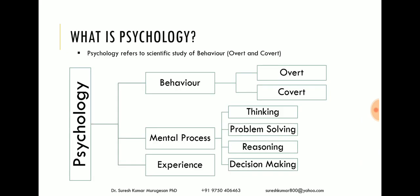What is psychology? Psychology is the scientific study of behavior — it may be overt behavior or covert behavior — and the mental processes, which include thinking, problem solving, reasoning and decision making, and finally experiences. In general, psychology is a scientific study of behavior, mental process and one's own experience.